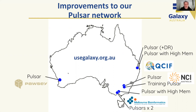All of these compute resources have been configured as what we call Pulsar servers. Galaxy communicates with these Pulsar servers and gets them to run jobs on Galaxy's behalf, allowing Galaxy to make use of all this remote compute resource via this network of Pulsar servers. This does present quite a challenge when it comes to load-balancing our job scheduling across all this disparate resource.